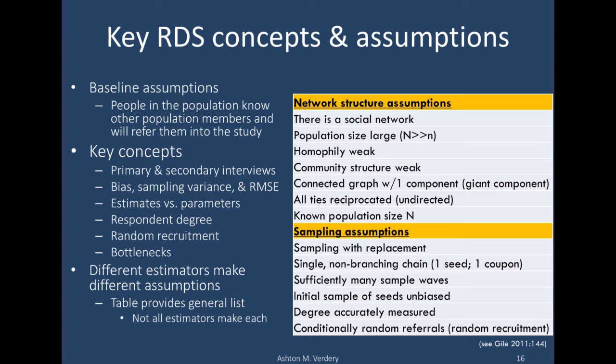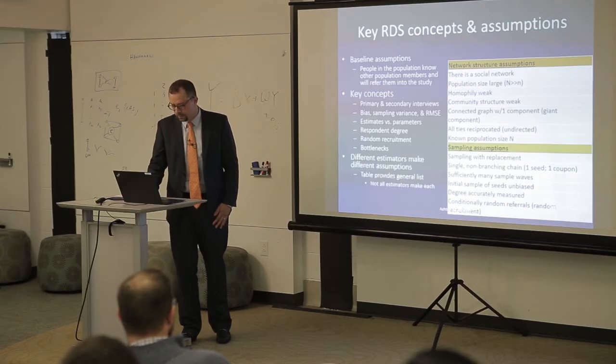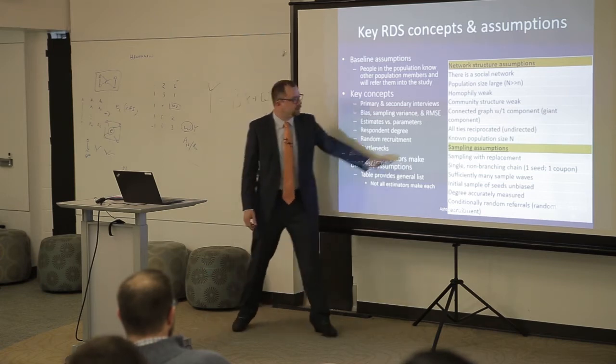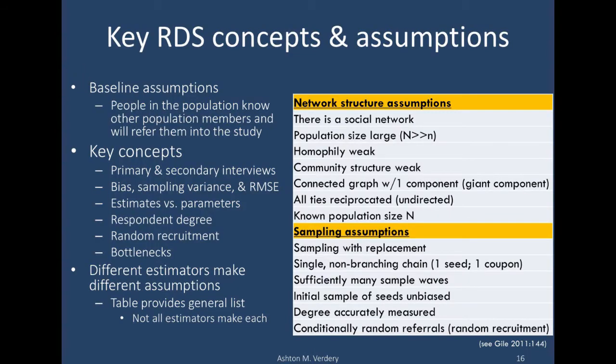I'm going to talk about key concepts of bias, sampling variance, and overall error. RDS tends to have trade-offs between how biased the result is versus how variable it is. There are also a number of RDS estimators that make slightly different assumptions about the network — assumptions about respondent degree, whether the network has bottlenecks, and things like that. Most estimators use some subset of these assumptions; for instance, the network is often sampled without replacement in practice, but a lot of estimators assume it is sampled with replacement.